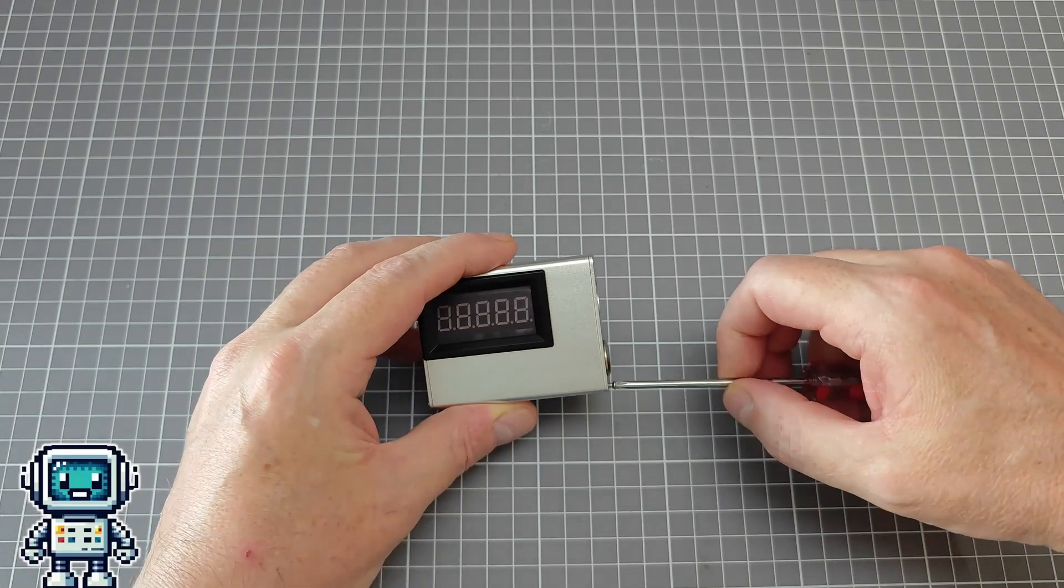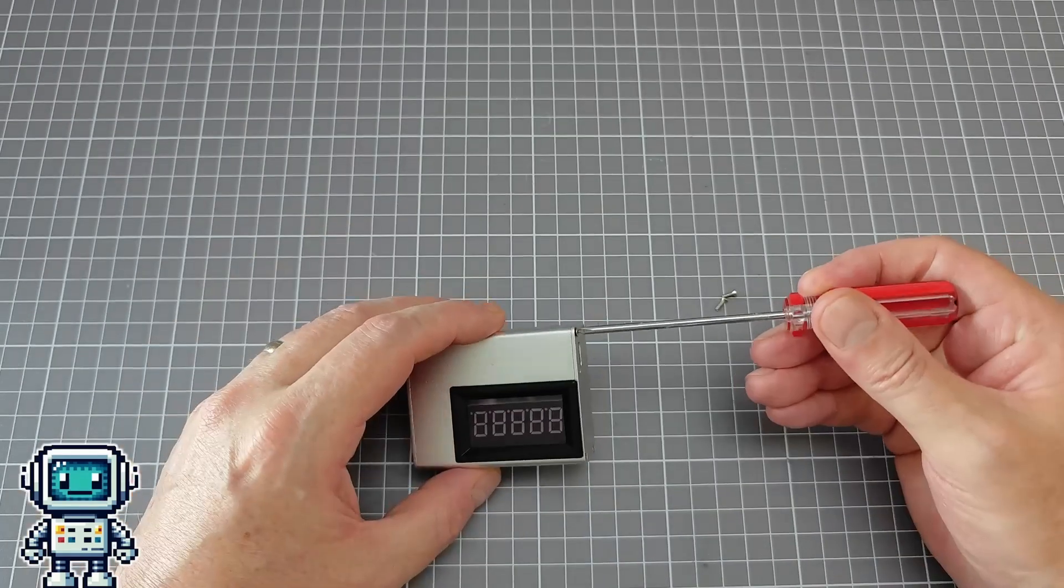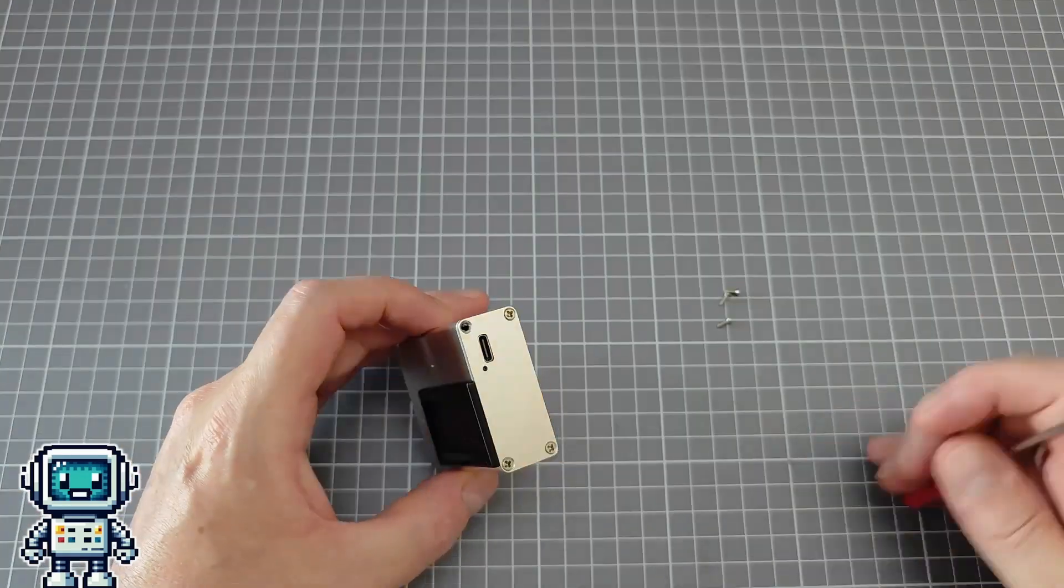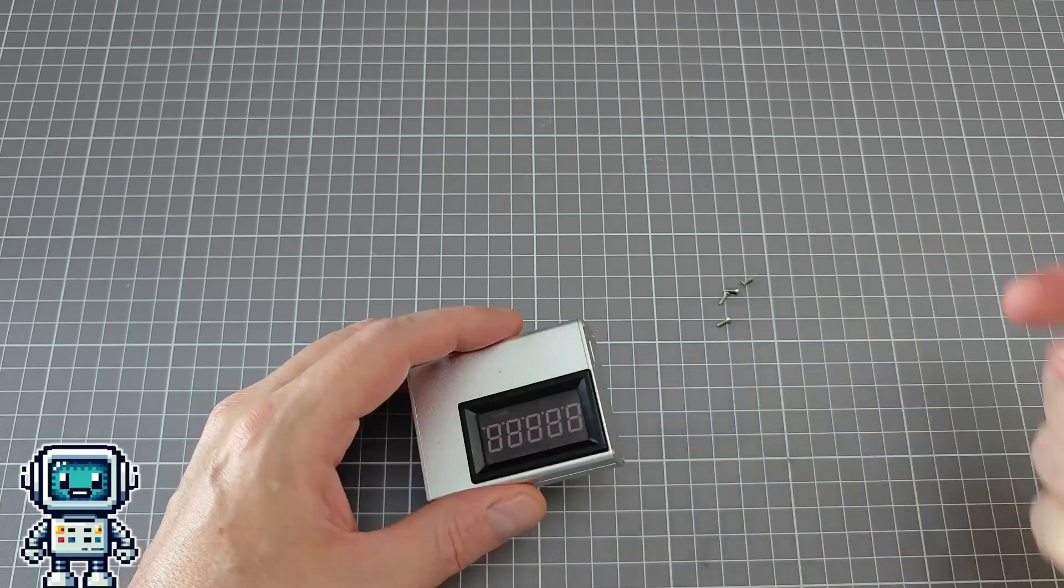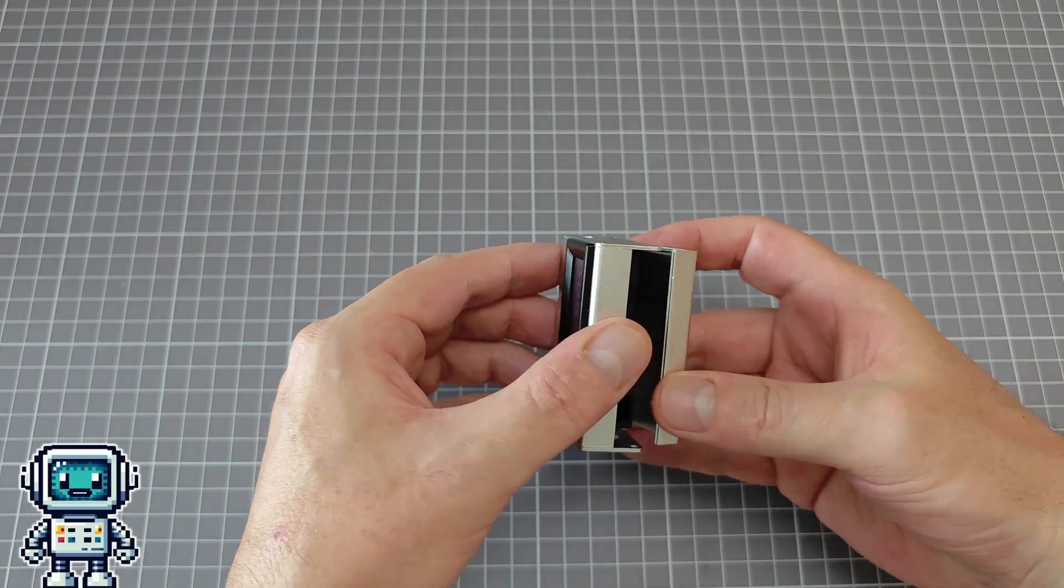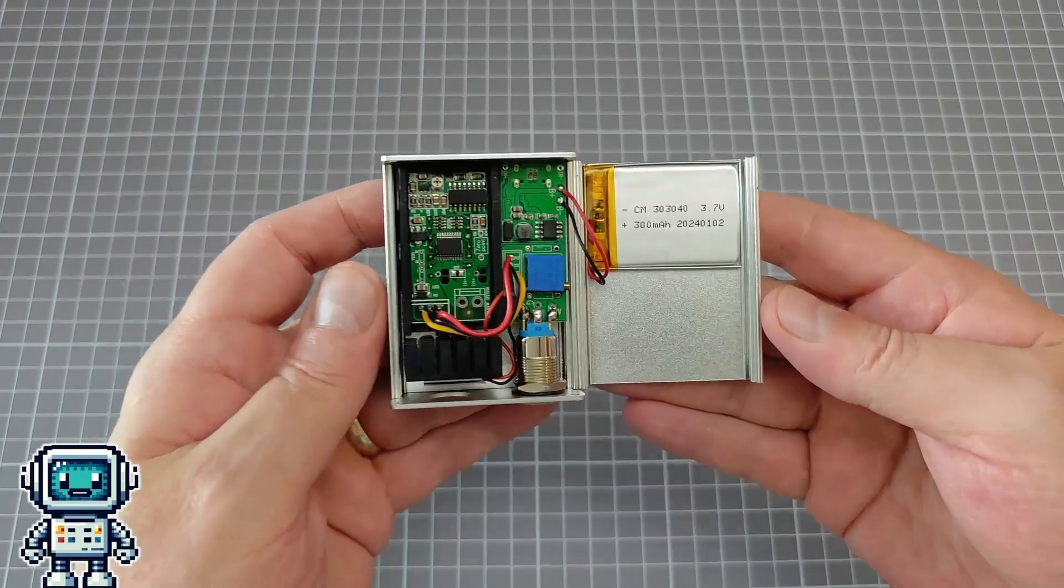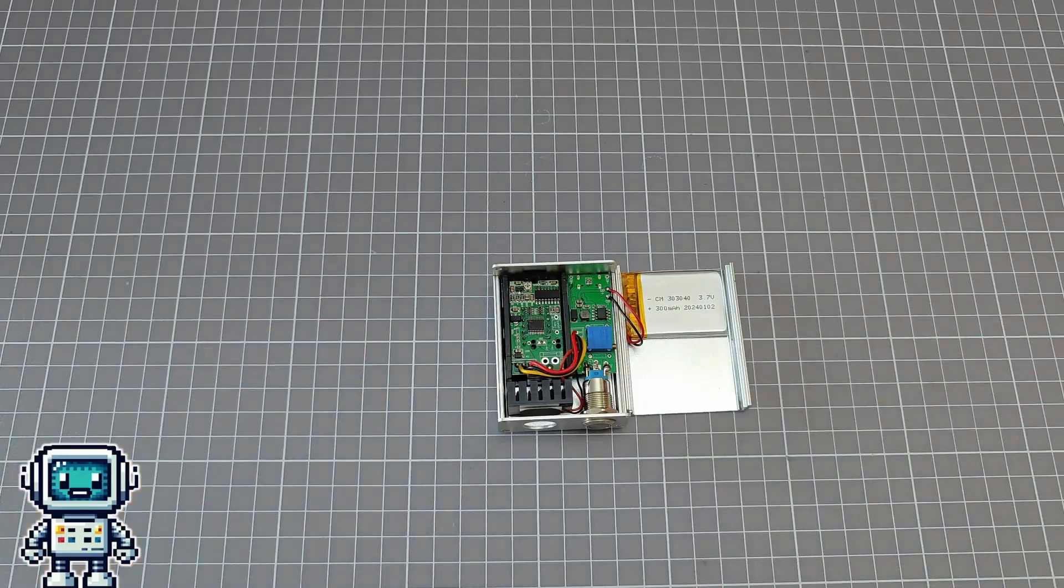If there is one thing that we dislike on this channel, it is products that are difficult to tear down. Fortunately, this miniature power meter has just 8 screws that need to be removed to allow the product to be fully disassembled. As soon as the product was opened, straight away something became abundantly clear. This was going to be a very brief teardown process.